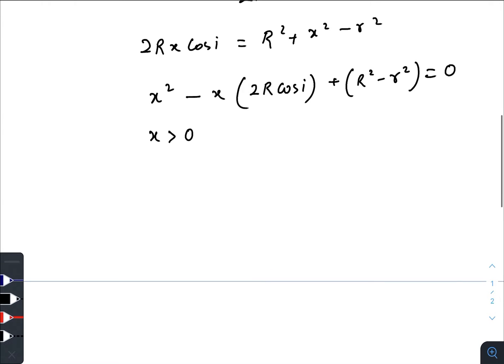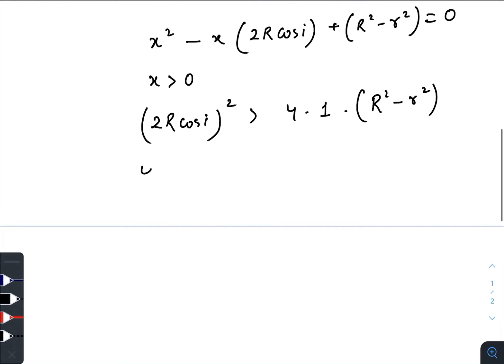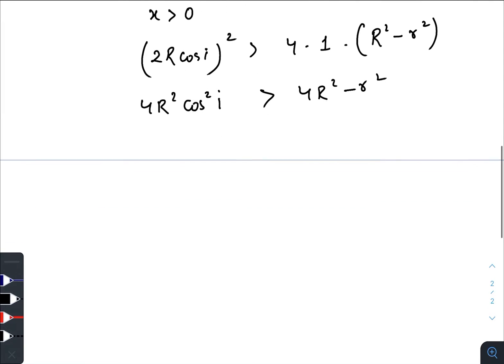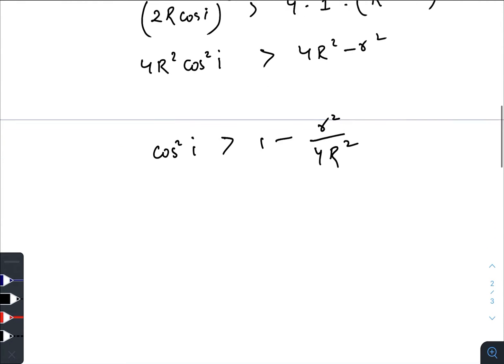We know that x is greater than 0, x must be positive. So 2R cos i whole square must be greater than 4 times coefficient of x² times coefficient of x⁰. We have 4R² cos² i greater than 4R² minus r². We have cos² i greater than 1 minus r²/4R².